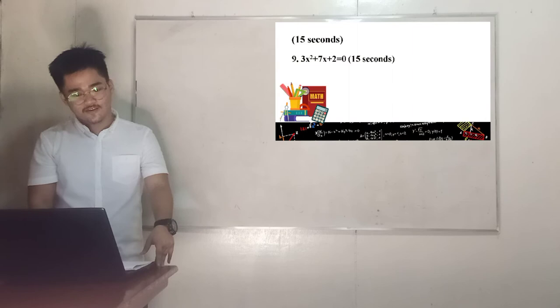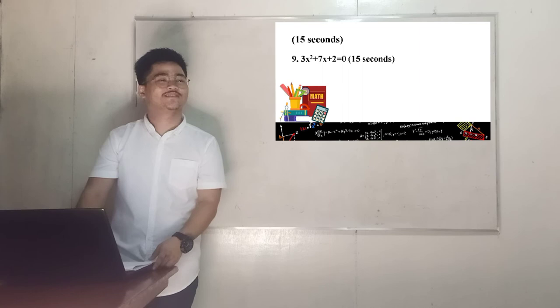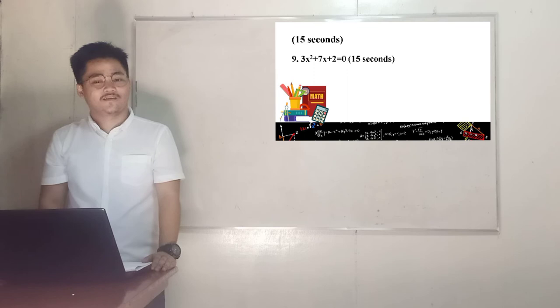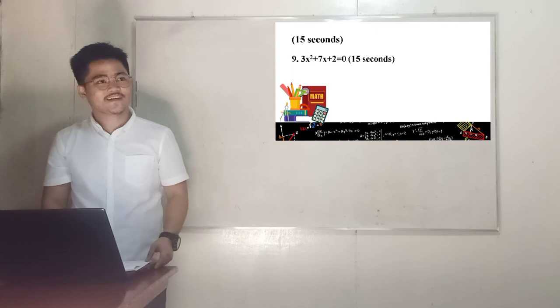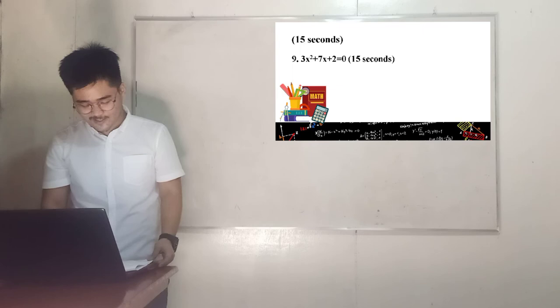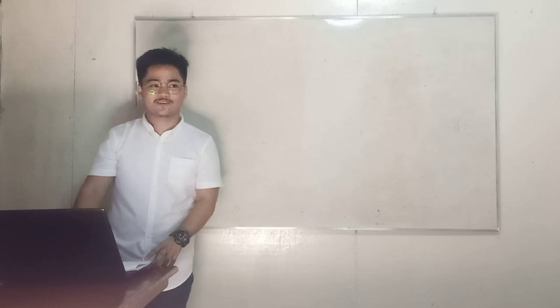Number 9: We have 3x squared plus 7x plus 2 equals 0. Time starts now. Okay, time's up. Raise your boards. These are the teams who got the correct answer: yellow team, green team, red team, and orange team. Very good. X equals negative 1 third and x equals negative 2.